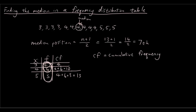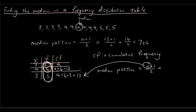Once you have the cumulative frequency column completed, you can use the median position formula, which is n plus 1 over 2. Now n is the same thing as the last number in the cumulative frequency column. So you substitute 13 where n is: 13 plus 1 over 2, which is 14 over 2, which is 7. So the median position is 7.